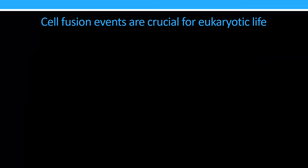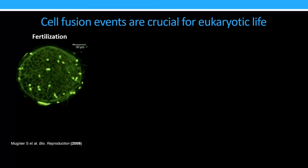Well, this is because different fusion events are really important for eukaryotic life, and especially we see this throughout eukaryotic development, so development of humans. And so the first fusion event that we see is the fusion event that occurs between a sperm and an egg cell, and this is required to form that diploid zygote that goes on to develop to become an infant and then to become all of us.